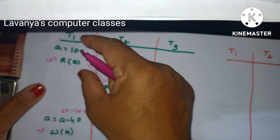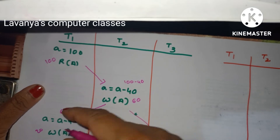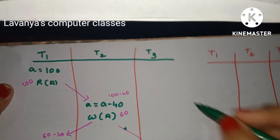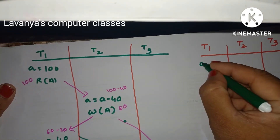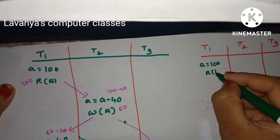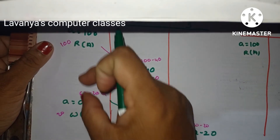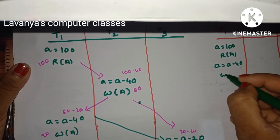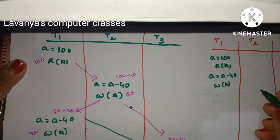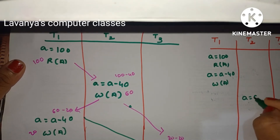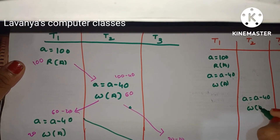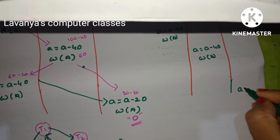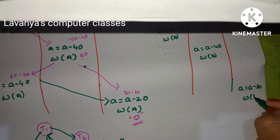Now create a serial schedule with the same transactions. Write all of T1's instructions first: a = 100, read a, then a = a − 40, write a. Then T2: a = a − 40, write a. Once T2 is completed, write T3: a = a − 20, write a.